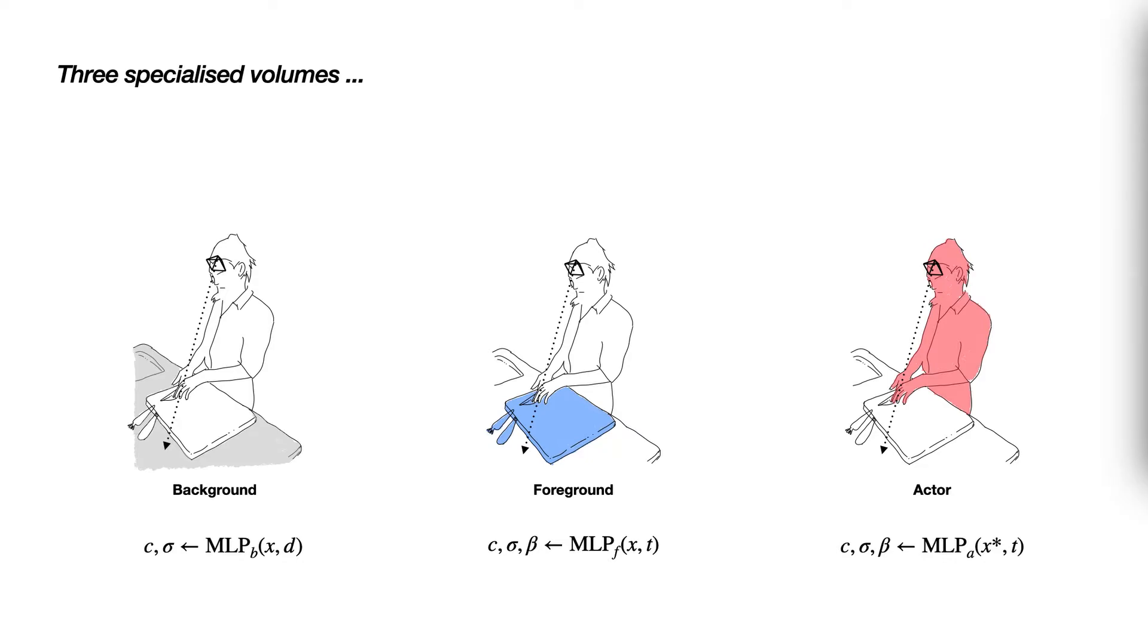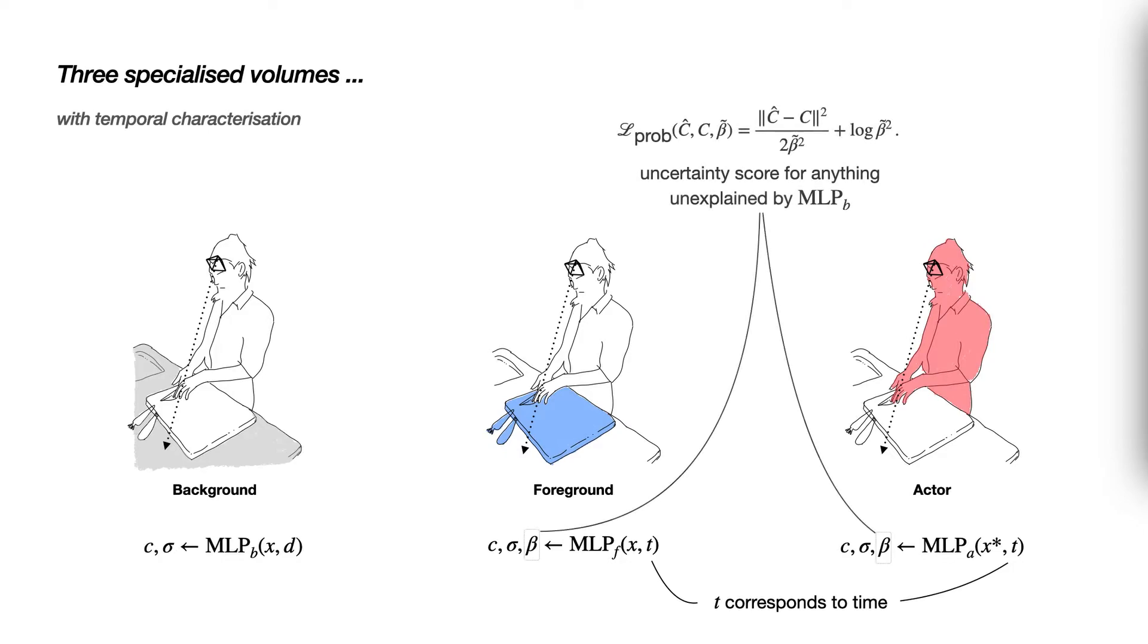First, we take time, represented by T, as an input for the foreground and actor model. This enables both models to render views not only depending on the spatial location, but also the temporal dimension. This is important for both models, as they are supposed to capture anything that changes over the whole video. We separate the learning of colors and densities that correspond to dynamic parts by modeling them with an uncertainty score beta. This score is rendered analogously to the color and enables both models to capture anything that cannot be expressed by the static model.